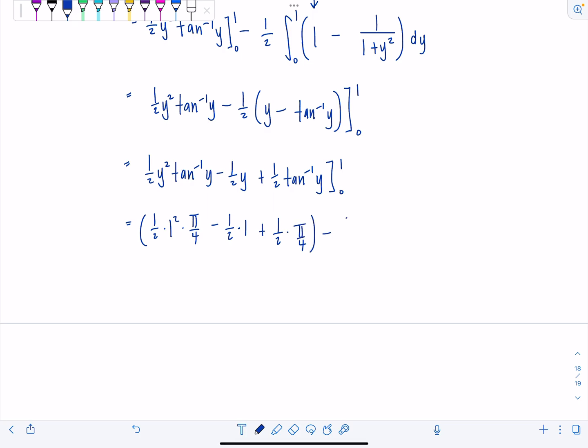Minus, and then now lower limit, 0. So 1 half 0 squared. Okay, that's going to be 0. Minus 1 half times 0 plus 1 half times tan inverse of 0 is 0.